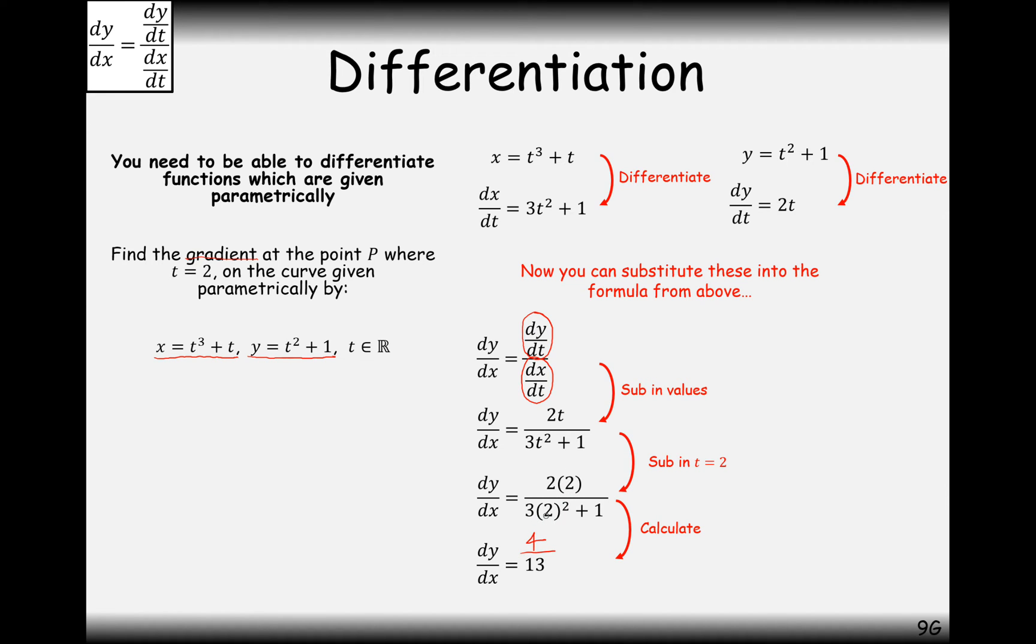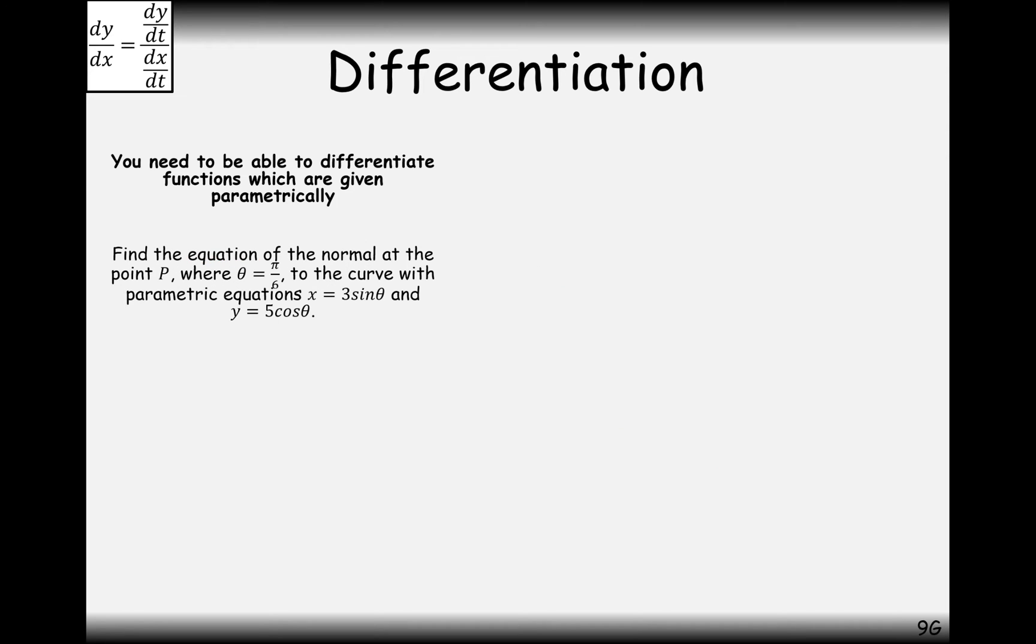Yeah, 2 times 2 is 4. 2 squared is 4 times the 3 gives you 12 plus the 1. That gives you 13. So there we are. That's the answer to that question there then.